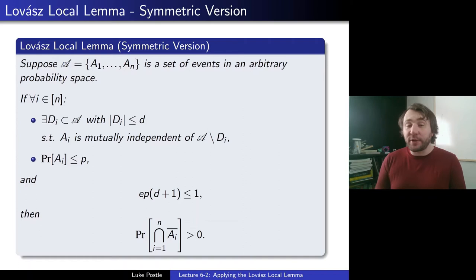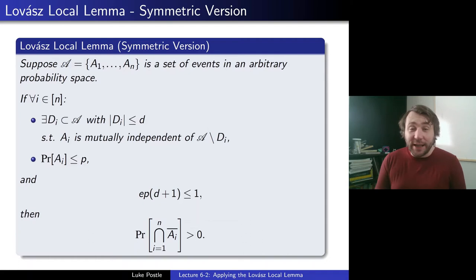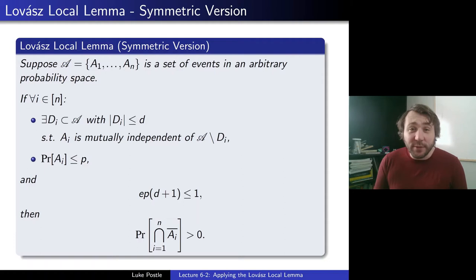The symmetric version supposes a set of events A1 up to An in an arbitrary probability space, and assumes that for each Ai there is a set Di of which Ai is mutually independent of all events outside Di, and that Di has size at most d, that the probability of Ai is at most p for all i, and that d and p are related by the formula: e·p·(d+1) ≤ 1. We then conclude that the probability that none of the events happen is positive.